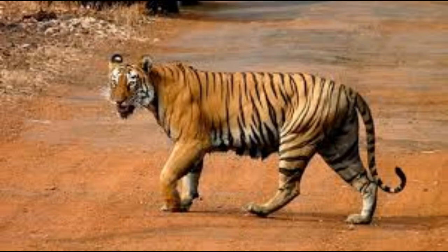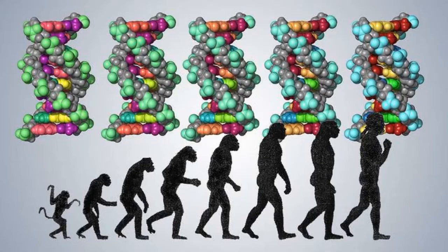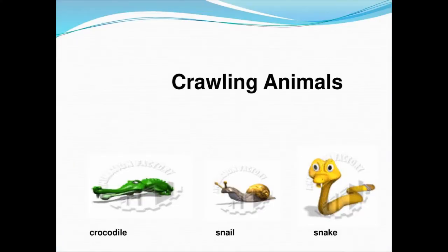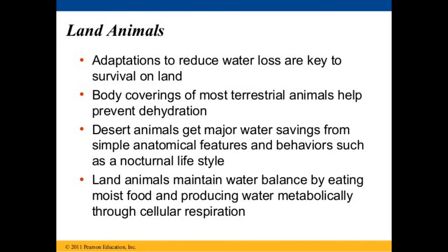Body muscles are well developed for walking and running in animals like humans, deer, and tiger. Some animals like lizards and snakes are adapted to crawl on the ground. Respiratory organs in terrestrial animals are lungs, which increase breathing efficiency and supply energy for all life activities.